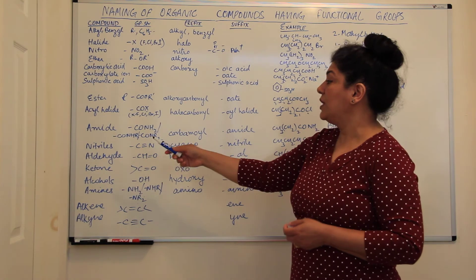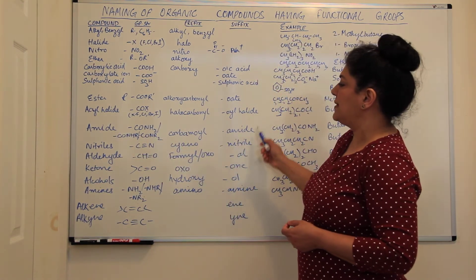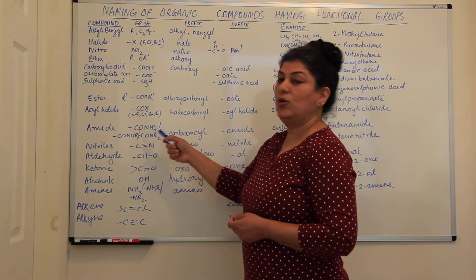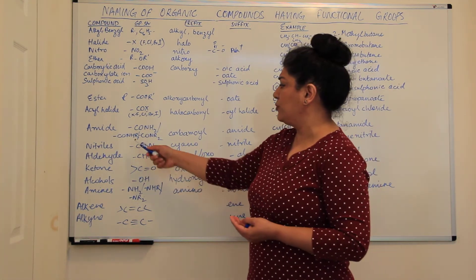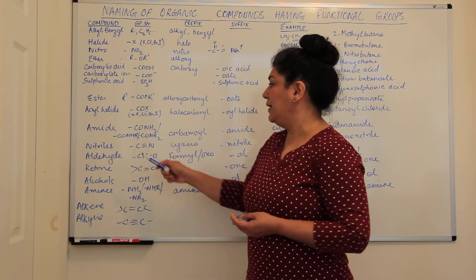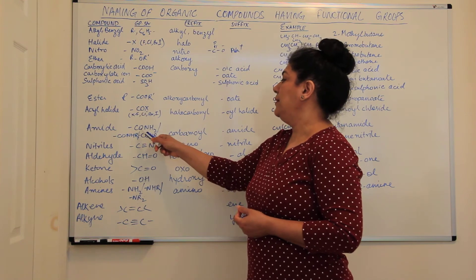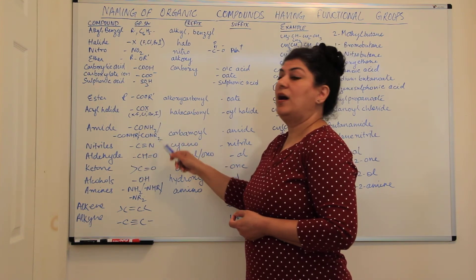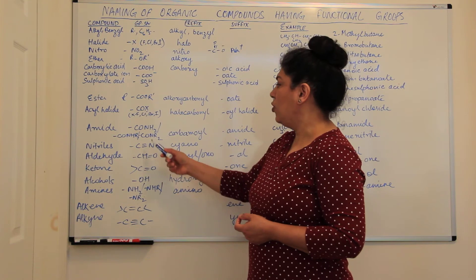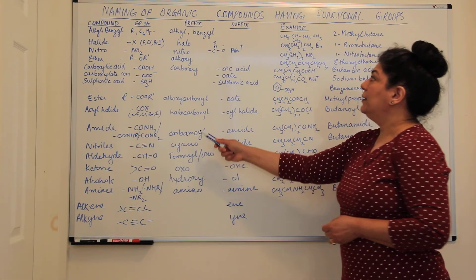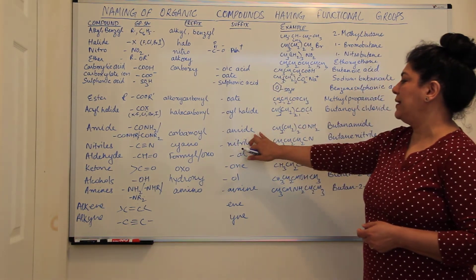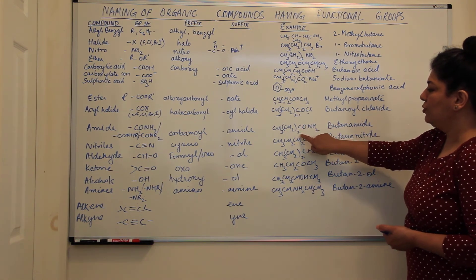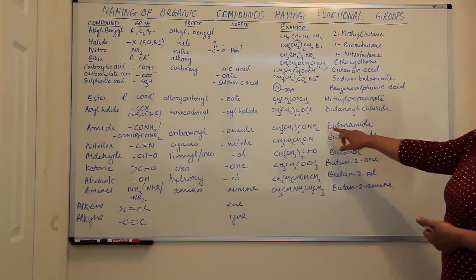The next class of compounds are amides. The suffix used is 'amide' and as a prefix it would be 'carbamide'. The group formula is CONH2, and the hydrogens may be substituted with other alkyl groups — one hydrogen substituted gives CONHR', both substituted gives CONR'R. For example, with CONH2 as the first carbon: one, two, three, four carbon atoms — this would be called butanamide.